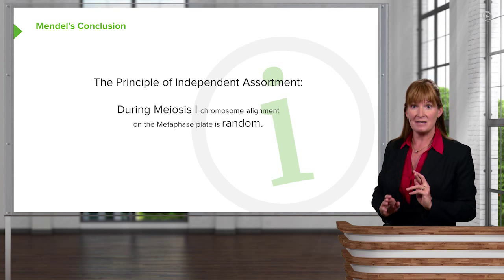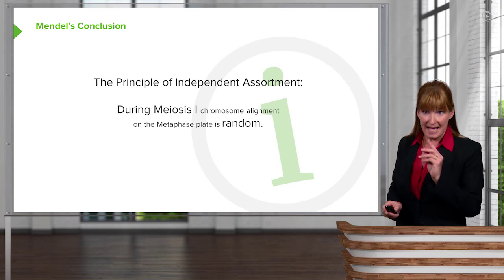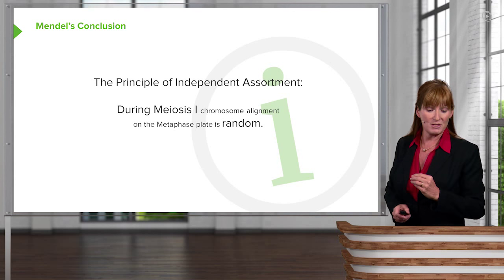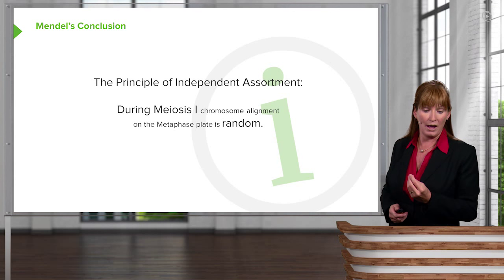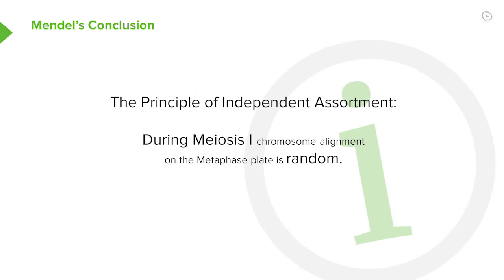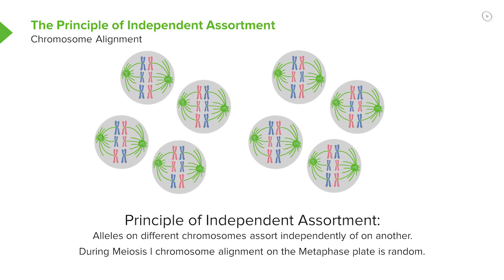In the language of meiosis and chromosomes, the principle of independent assortment states that during meiosis I, chromosome alignment is random on the metaphase plate, such that chromosomes can segregate from each other independently. When we look at meiosis, we can see that this random alignment of chromosome pairs on the metaphase plate of meiosis I supports Mendel's principle of independent assortment.